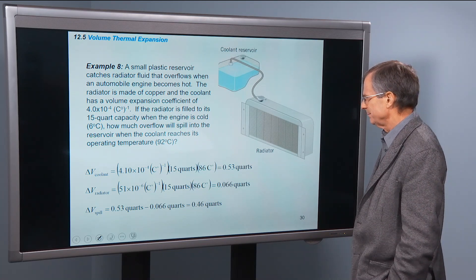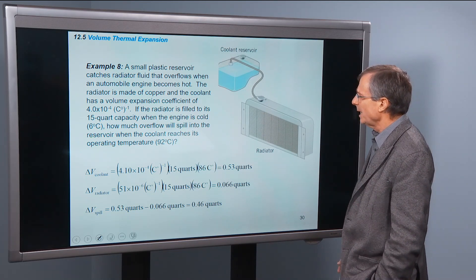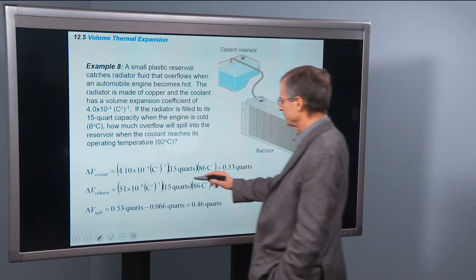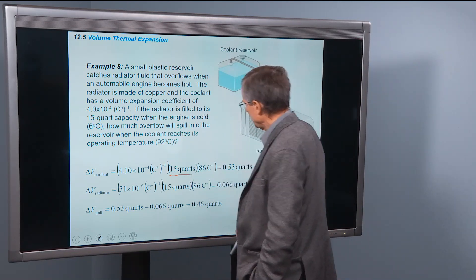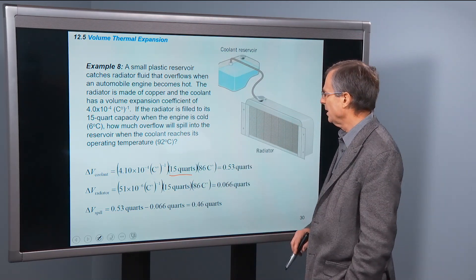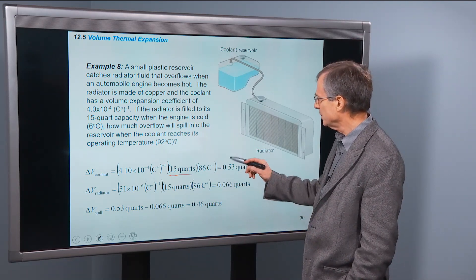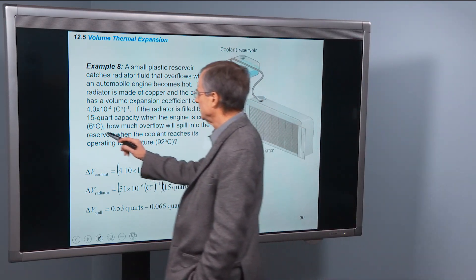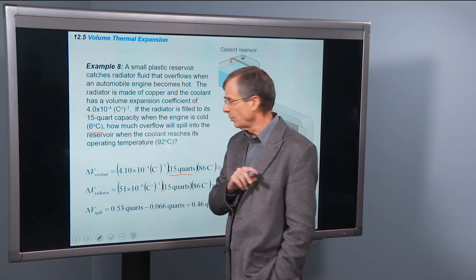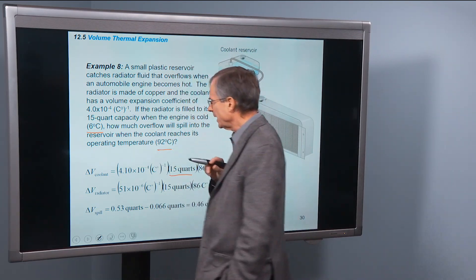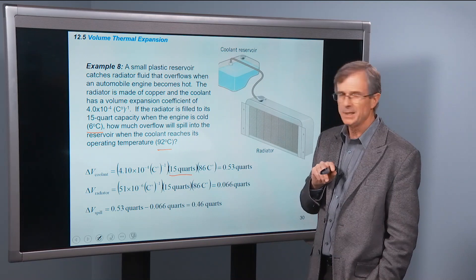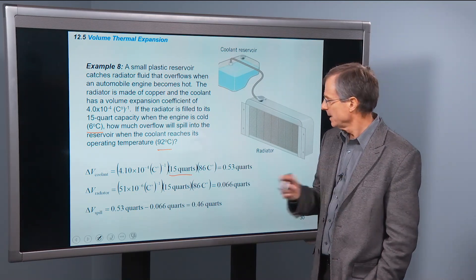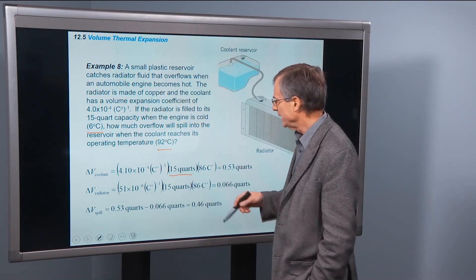All right. So we've got 15 quarts, and we are increasing the temperature from 6 degrees C, when the engine is cold, to 92 degrees C, when the engine is warm. Difference between those two? 86. So that's my delta T.